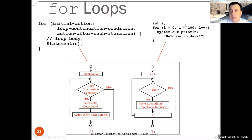For instance, to print 'Welcome to Java' 100 times: we declare variable i, initialize it to zero in the initial action. Zero is less than 100, so it prints 'Welcome to Java' once, then executes the action after each iteration — incrementing i by one — and checks the condition again. Is 1 less than 100? Yes — prints again, increments i to 2. This executes in a loop until i becomes 100 and the condition becomes false, at which moment we exit the loop. A for loop has four parts: the initial action, the loop continuation condition, the action after each iteration, and the body.